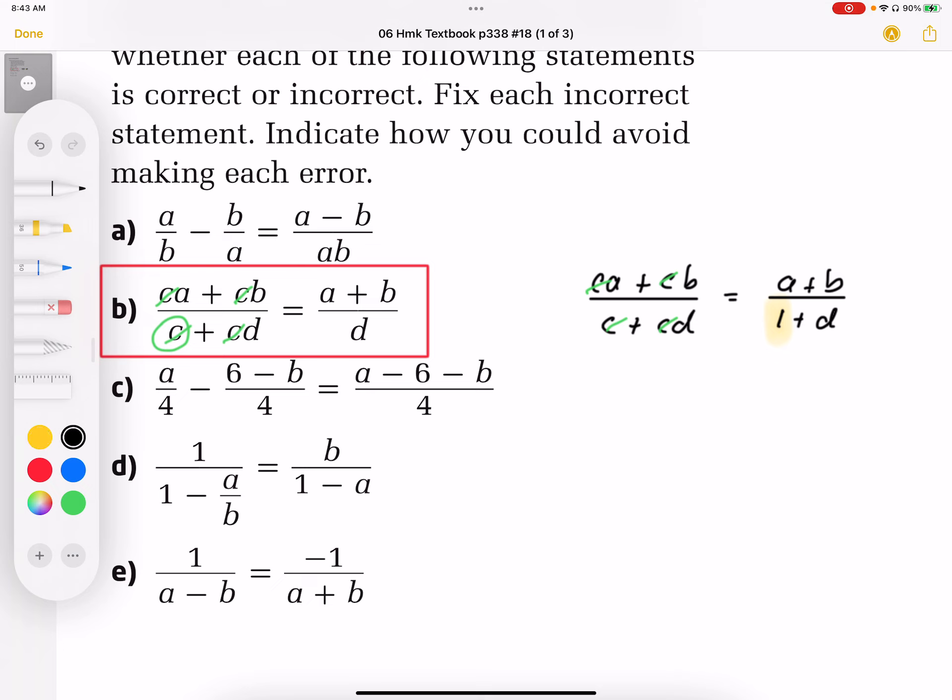Another way we can show it is we can just show it as factors. a plus b over c. This is one plus d when we factor out the c we're left with one, and again cancelling those out we end up with that solution.